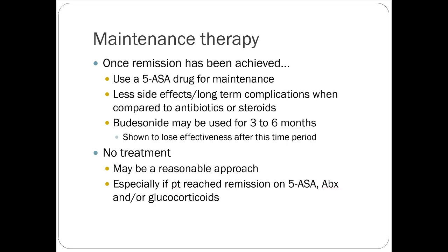Budesonide is a good option for people who are intolerant or have contraindications to systemic steroids. For maintenance after mild active Crohn's disease, if you got somebody into remission using 5-ASA drugs, steroids, and/or antibiotics, you might use a 5-ASA drug long-term for maintenance. Budesonide can be used for about three to six months — not because of side effects after that, it just doesn't work as well once used regularly.